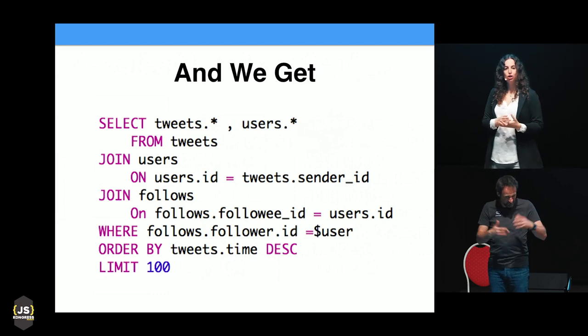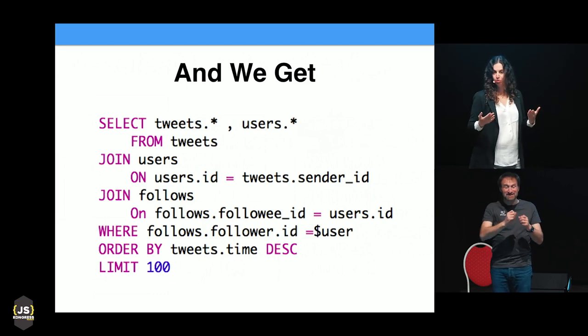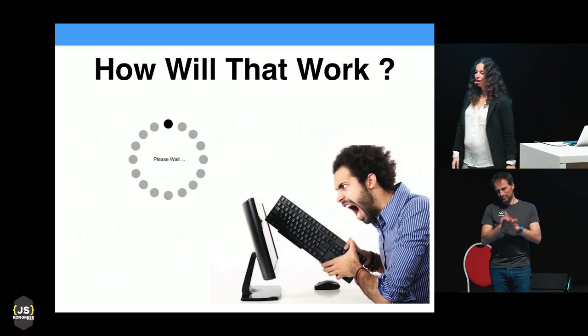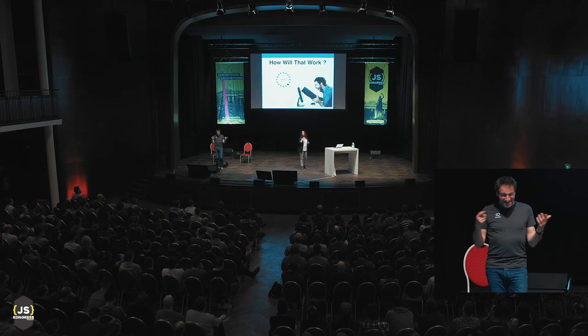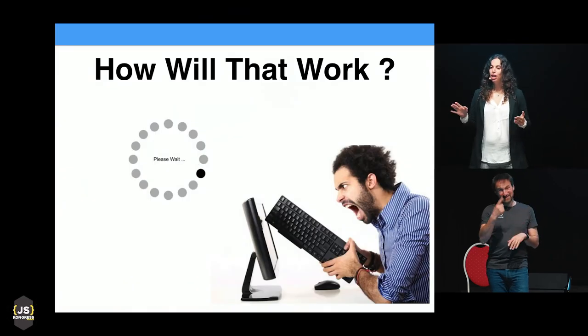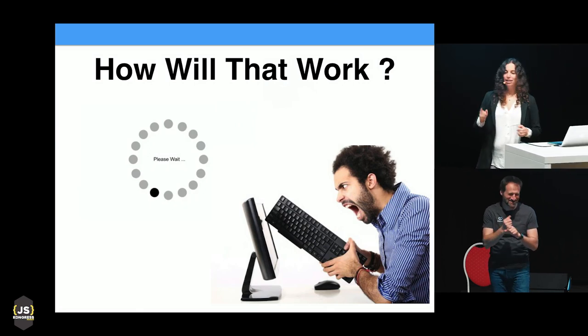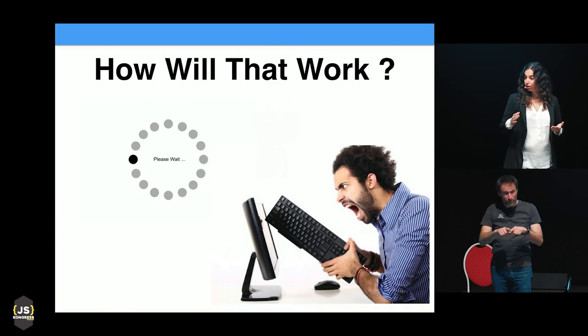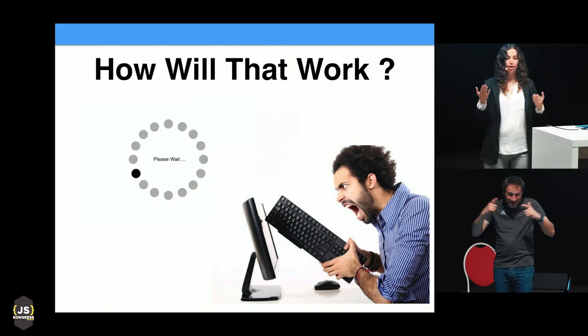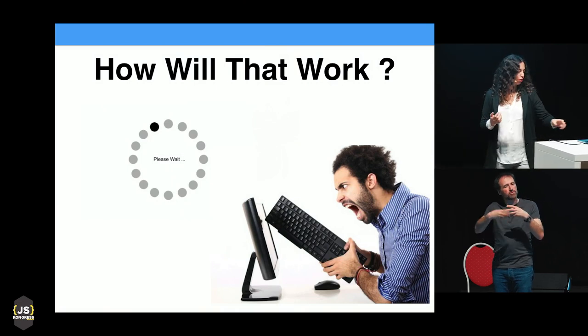I might end up with something like this. My question to you is: how is this going to scale? Not really well. The code you just saw was actually how Twitter modeled their database and entities in the early days, and they got a lot of frustrated users because the news feed was not scalable and not loading fast enough.